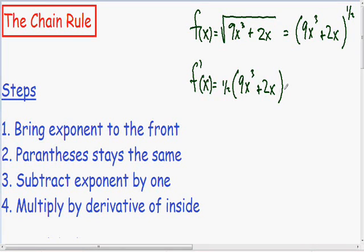And our third step is we want to subtract the exponent by one. So since we had a one-half exponent in our original function, we want to subtract one-half by one. So one-half minus one is negative one-half. So in our derivative, the exponent is going to be negative one-half.